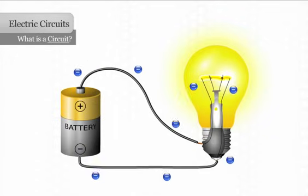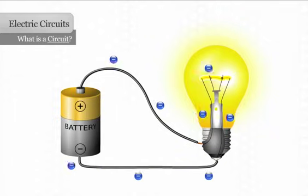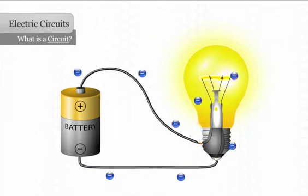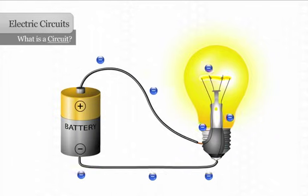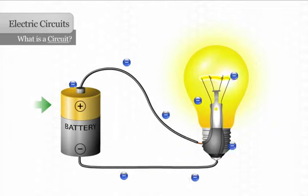When the electrons go through the filament, some of the electrical energy is changed to heat and light energy. The electrons continue down another small wire inside the bulb to another conductor on the base of the bulb. The electrons finally make their way to the positive side of the battery.